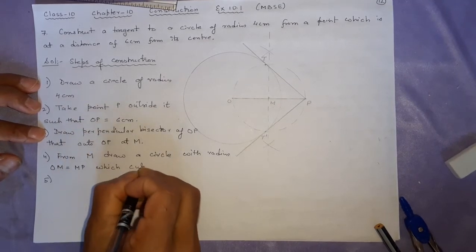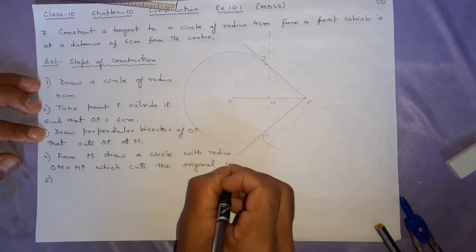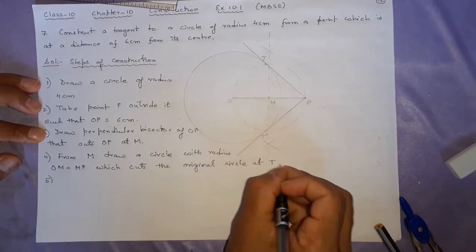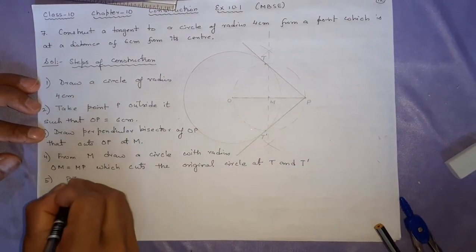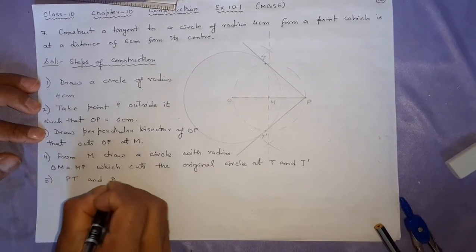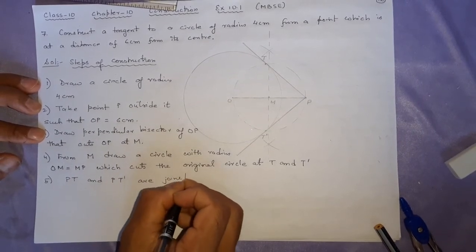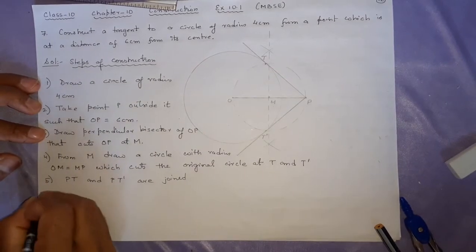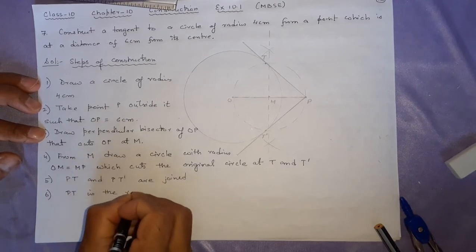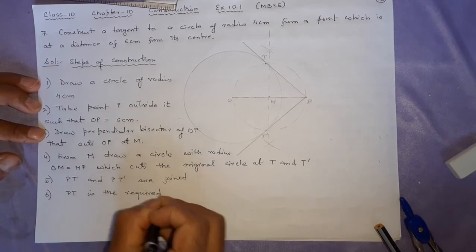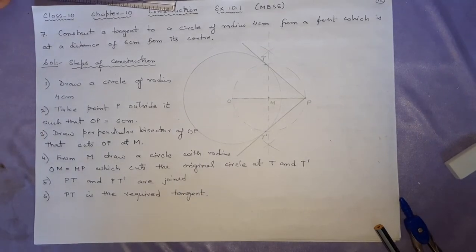Step 5: This cuts the original circle at T and T'. Join PT and PT'. Step 6: PT is the required tangent. Only one was asked, so I am writing only one. Okay, this is all. Thank you.